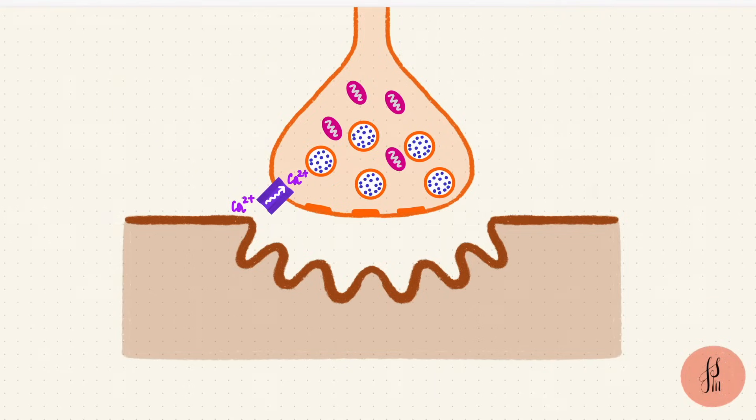The postsynaptic membrane is formed by the muscle fiber membrane. Now the portion of the membrane that forms the synapse is thickened, and it's thrown into folds. These are called junctional folds.